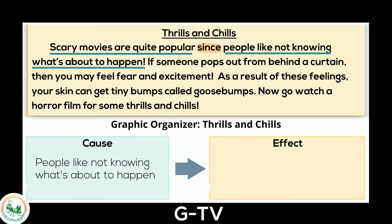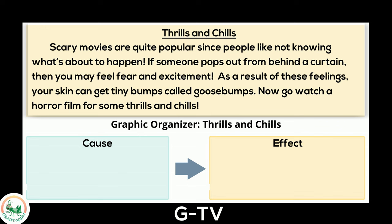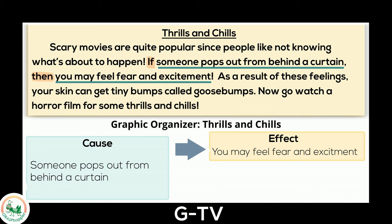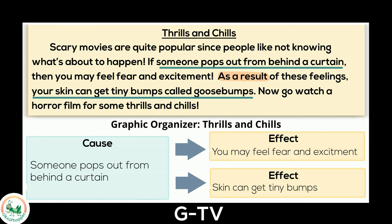Now let's take a peek at the connected information to the signal words 'if' and 'then.' The cause is someone pops out from behind a curtain, and the effect of that is you may feel fear and excitement. Let's put that information into the cause and effect boxes here. The signal word 'as a result' is last — this sentence tells another effect of the same cause. Someone jumping out results in your skin getting tiny bumps. Let's add that effect here since it connects to the same cause.